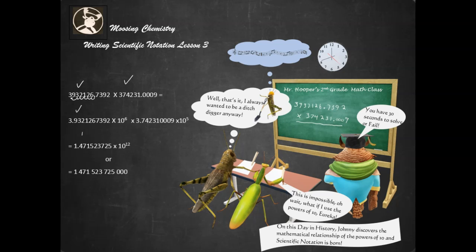And the same thing with this next number. You go 1, 2, 3, 4, 5. This makes that number 3.742310009 times 10 to the 5th.